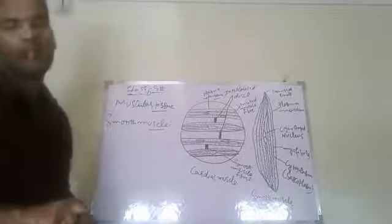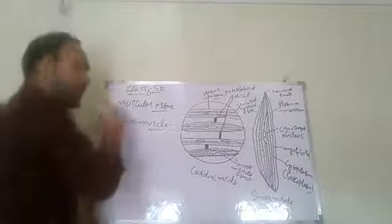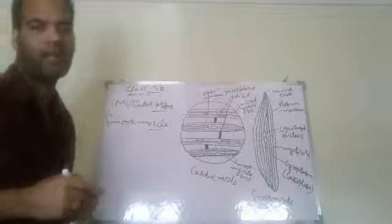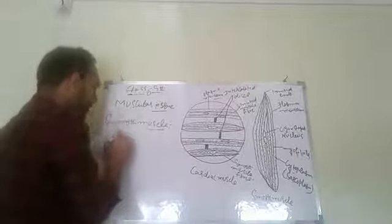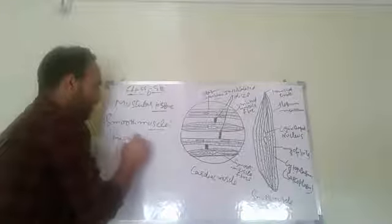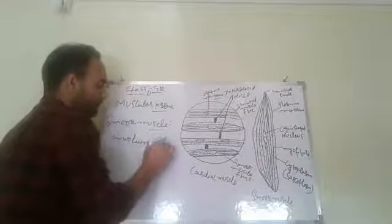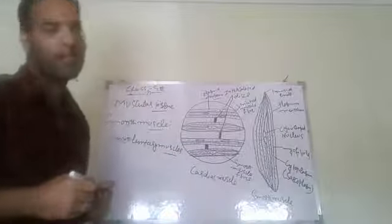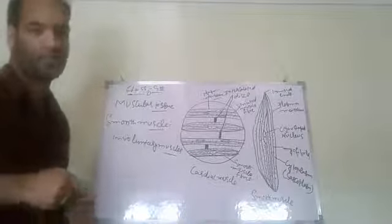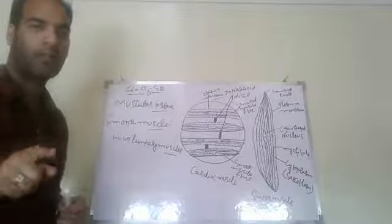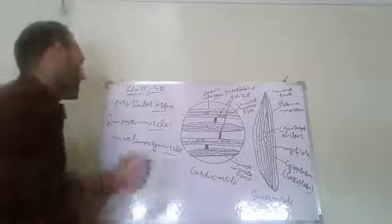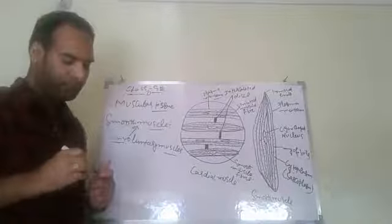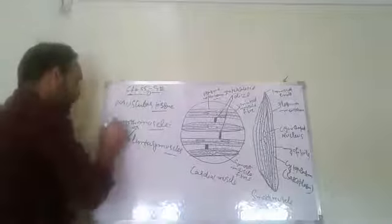Smooth muscles are also known as involuntary muscles. As I have already told you, striated muscles are called voluntary muscles because they work according to the will of an organism. But smooth muscles are called involuntary muscles because they work against the will of an organism.